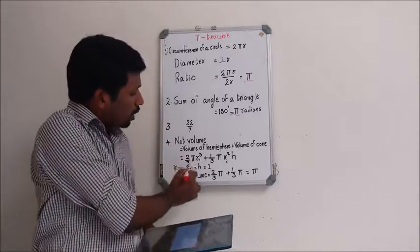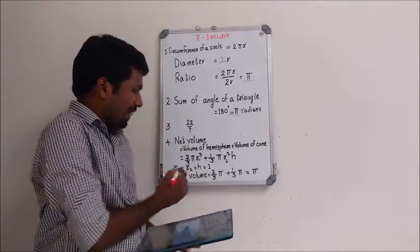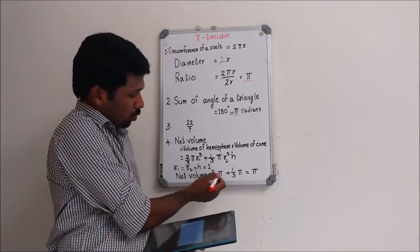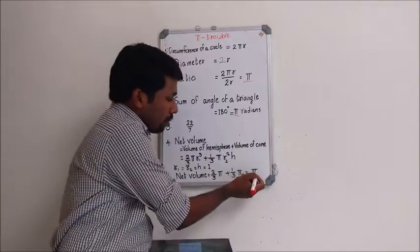Substituting r₁ = r₂ = h = 1 in the equation of net volume, we will get that net volume equals 2/3 π + 1/3 π, which equals π itself.